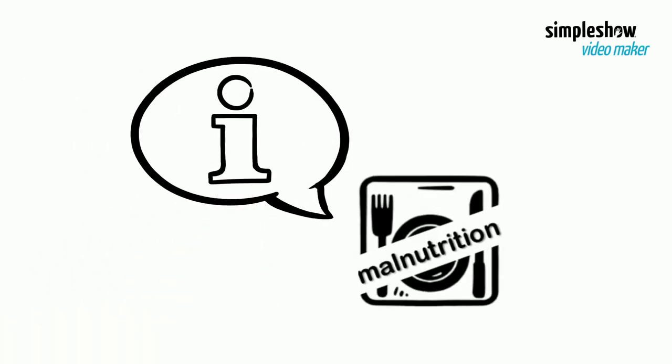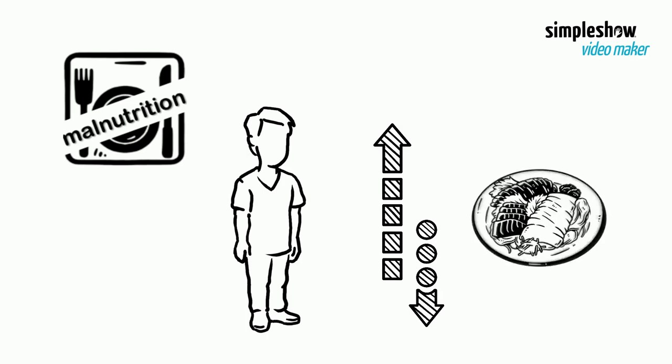We explain malnutrition. Malnutrition occurs when a person gets too much or too little of certain nutrients.